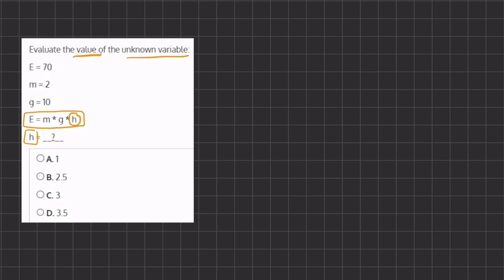And this is possible because we are given the value of e, m, and g. So let's plug in all the values that we know into this expression. So we have e, and instead of e we're going to be writing 70, equals m which is 2, times g which is 10, times h which is our unknown variable.